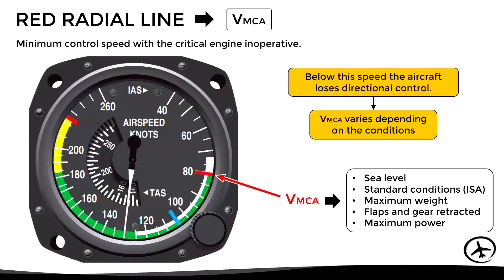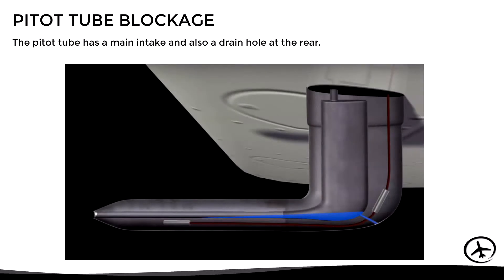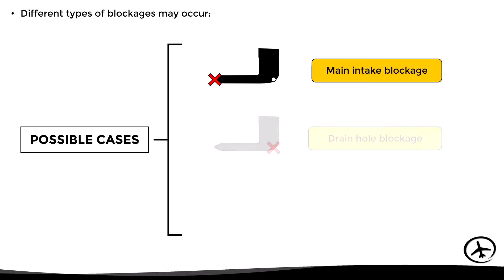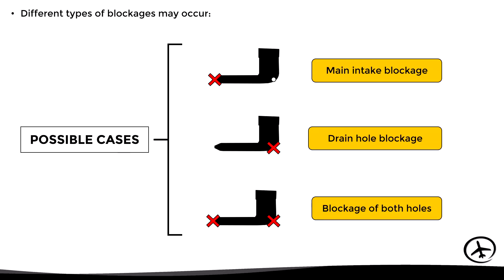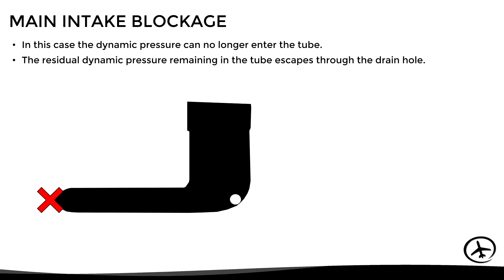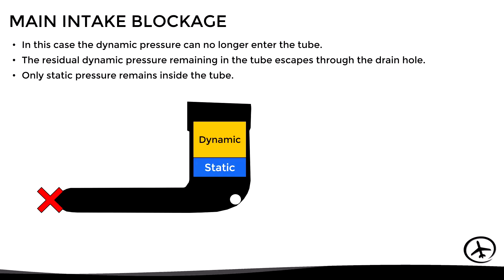Let's now continue with the pitot-static system blockages. The pitot tube has two holes: a main intake in the front and a drain hole at the rear. There are three possible blockage cases: a main intake blockage, a drain hole blockage, or a blockage of both holes. In each case the indicator reacts differently. Starting with a main intake blockage — in this case the dynamic pressure can no longer enter the tube, and the residual dynamic pressure escapes through the drain hole, leaving only static pressure.